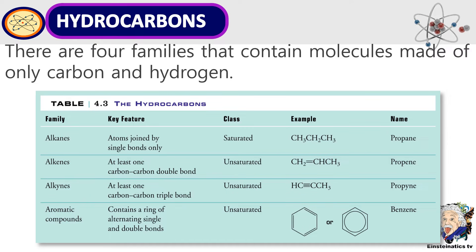Single bands of Z wherein alkanes — yung alkenes naman they are made from carbon to carbon double bond, and yung alkynes naman ito ay binubuo or dinudugtong ng isang triple bond. And of course yung aromatic compounds naman, this contains a ring of alternating single and double bonds. So as you can see here, there are the examples, and of course the class which is saturated, unsaturated, and of course yung aromatic compounds are also unsaturated.